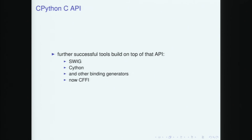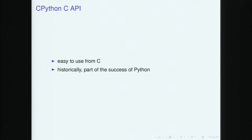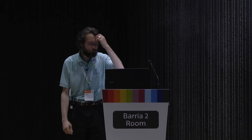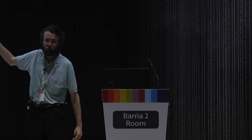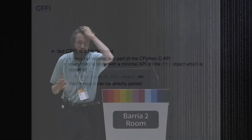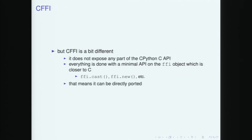PyPy has a large and messy C API to implement. I would argue that the CPython C API was actually part of the historical success of Python — why Python became really useful 10 to 15 years ago is partly because of this C API, which people used to build interesting things. Then came all the binding generators built on top of it, so you don't need to write C extensions manually. CFFI is just one more such tool.